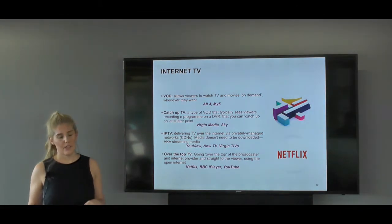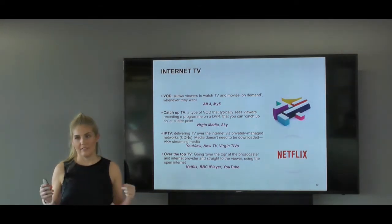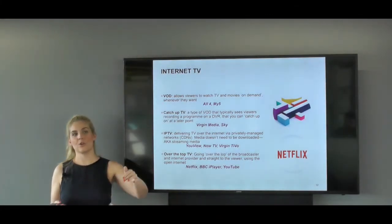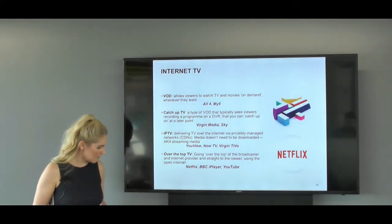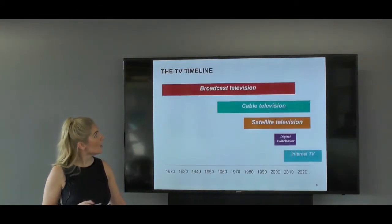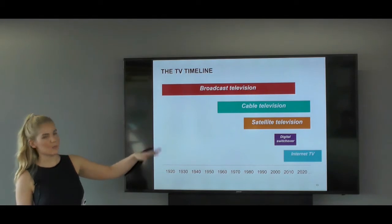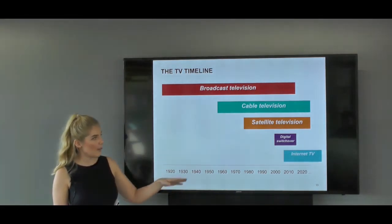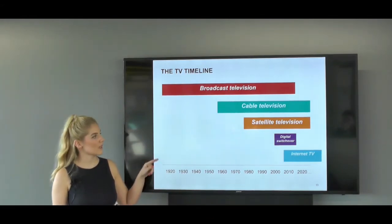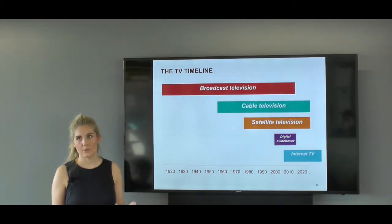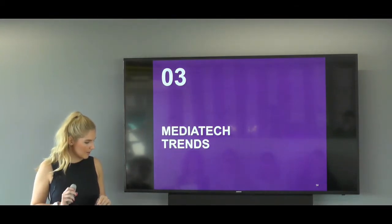Examples of IPTV in the UK include UView, Now TV, and Virgin TiVo. Then finally there's over-the-top TV, or OTT — going over the top of broadcasters or internet service providers and delivering TV services direct to the viewer. Netflix is the prime example. There's also a timeline showing the different types of TV — cable and satellite are still around today, but with companies like Amazon Prime and Netflix, traditional cable and satellite providers are looking to bring out internet TV services to remain competitive.